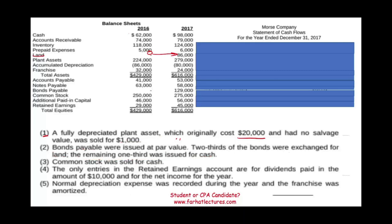Common stock was sold for cash — we went from $250,000 to $285,000 in common stock. The only entries in the retained earnings accounts are for dividends paid in the amount of $10,000, and net income for the year also affected retained earnings. A normal depreciation expense was recorded during the year, and the franchise was amortized.